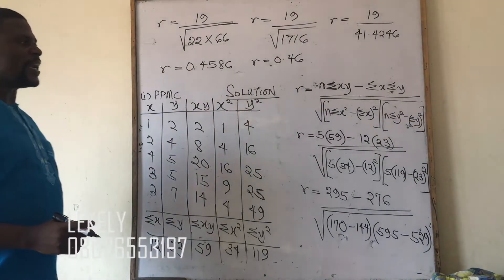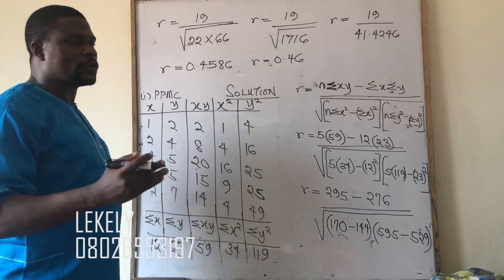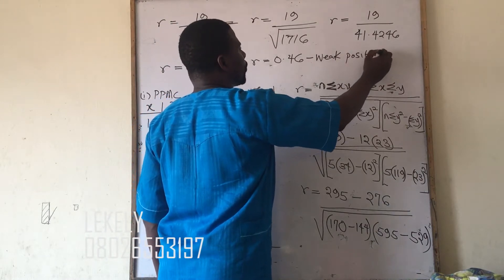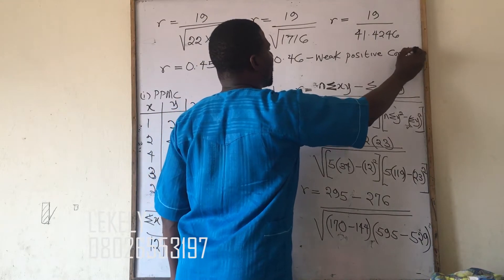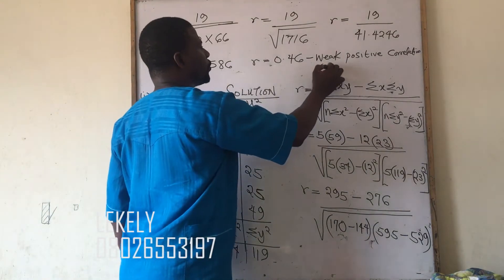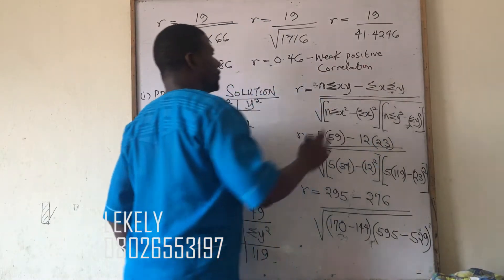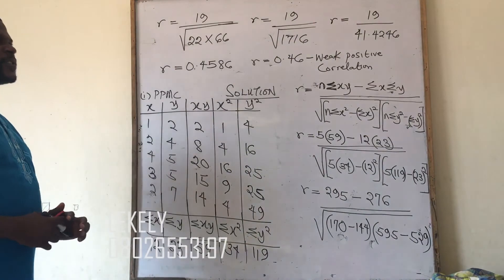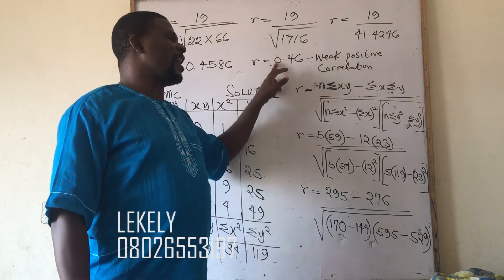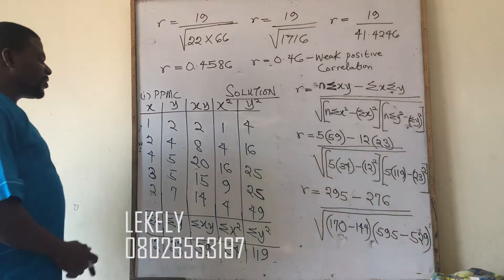Since our answer is positive and falls below 0.5, the interpretation is weak positive correlation. You are expected to interpret with a correlation statement. It is weak because it is less than 0.5, and positive because it does not have a minus sign.